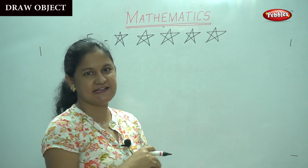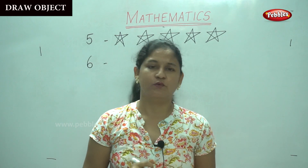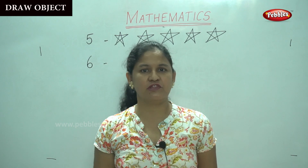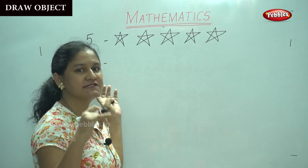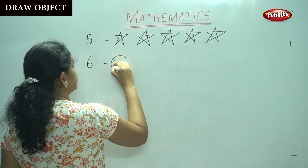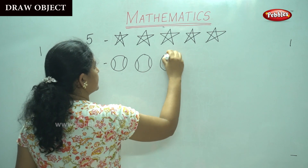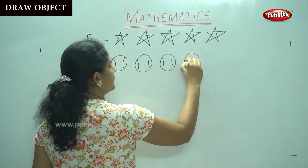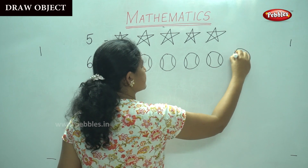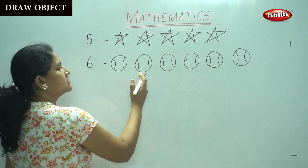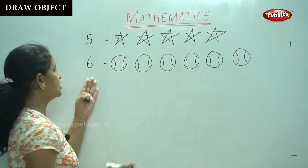Shall we move on to the next number? Number 6. All of us like to play with a ball when we go to the park or when we are with our friends. So, I am going to draw how many balls? For number 6, I am going to draw 6 balls. 1, 2, 3, 4, 5, 6. We have drawn 6 balls for number 6.